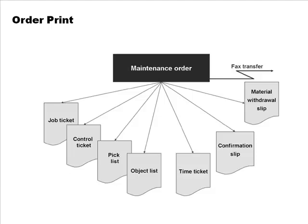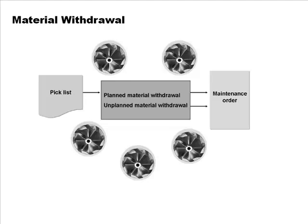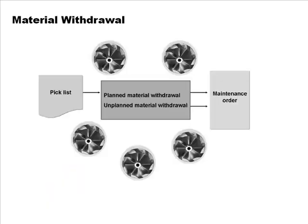Many different documents can be printed for the maintenance order once it is released. These include the job ticket, which provides a complete overview for the maintenance team; the control ticket, which is an engineering overview; and a pick list for materials, among others.